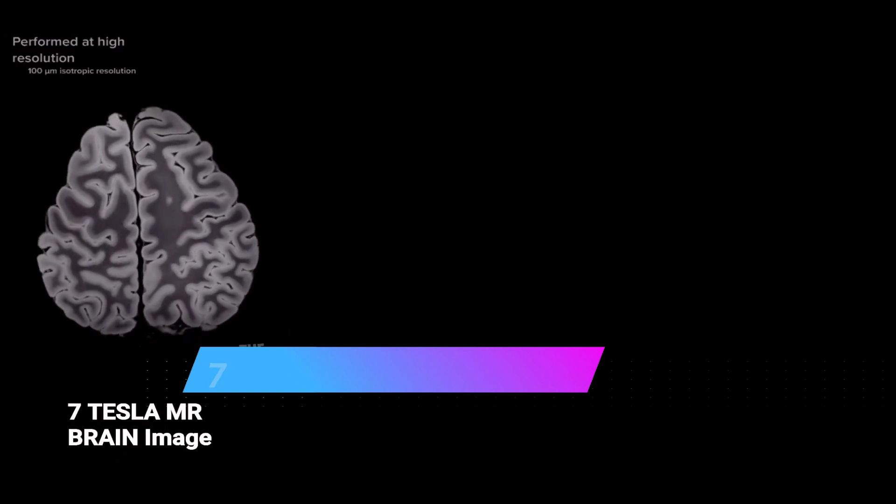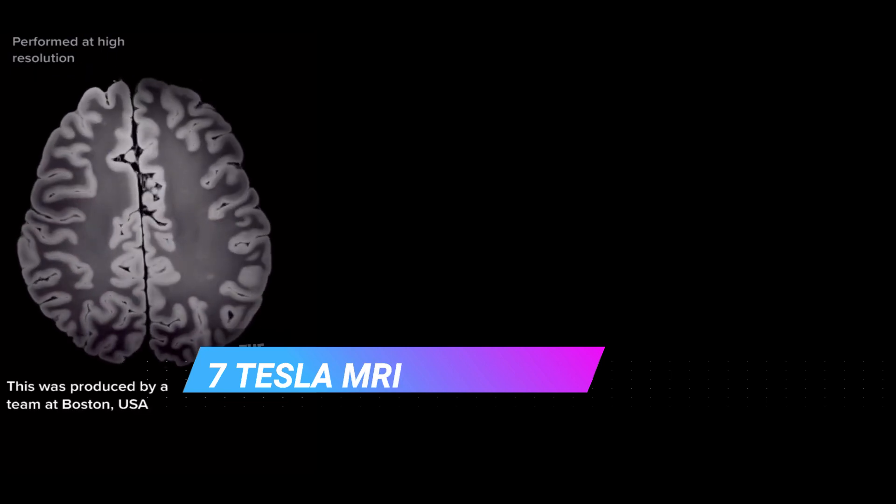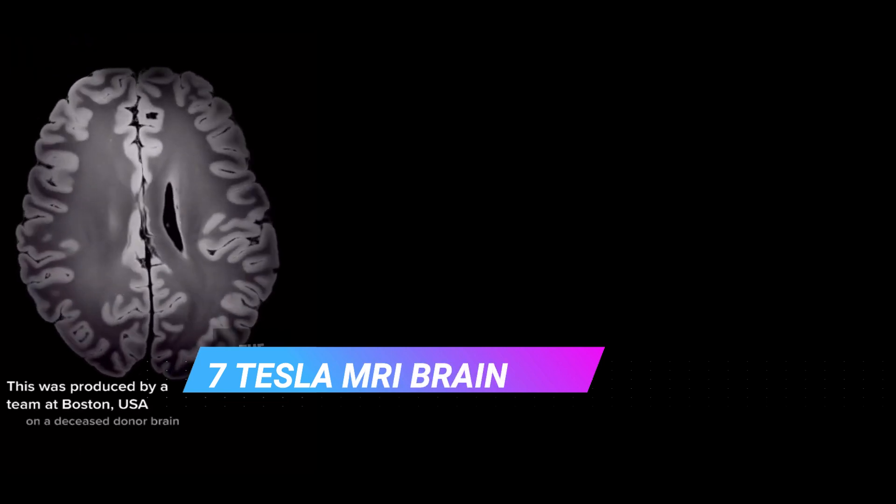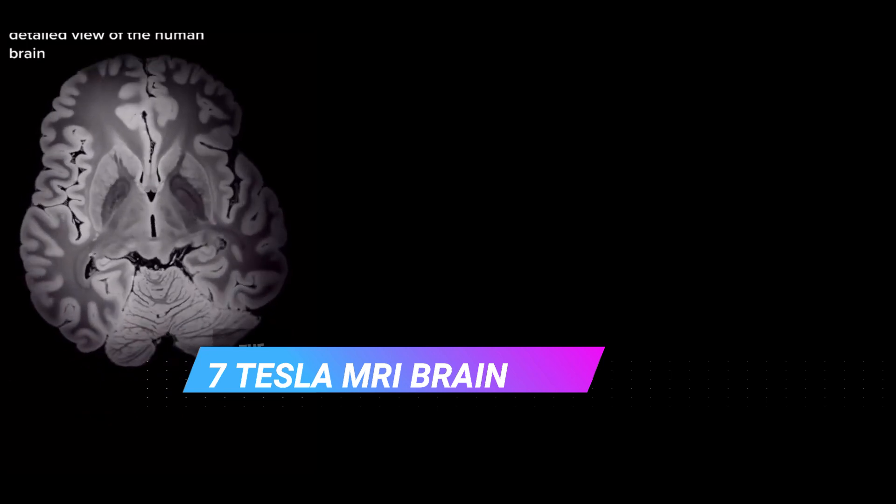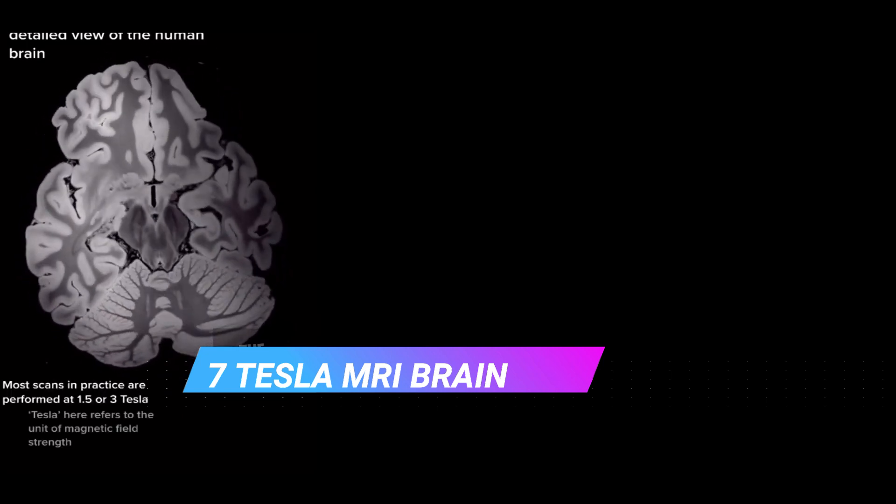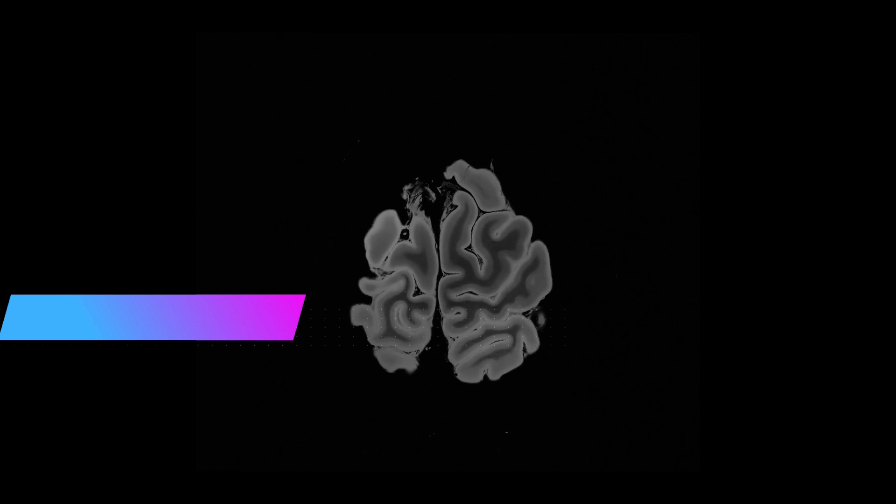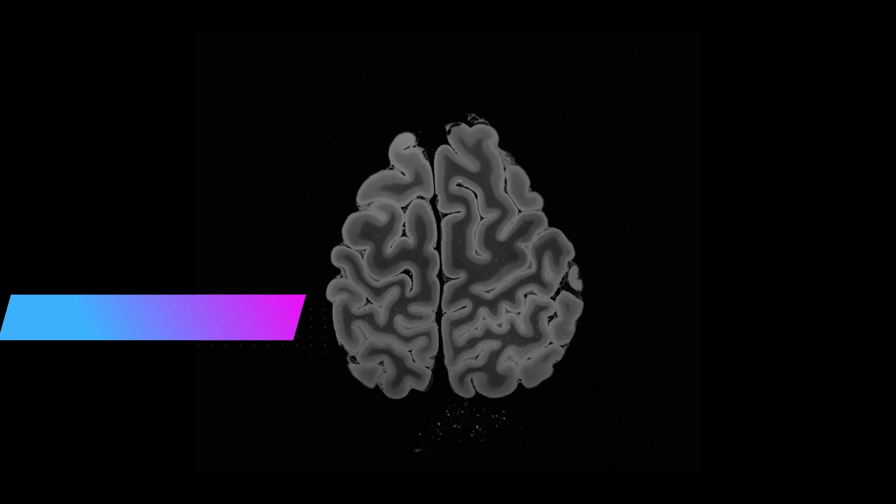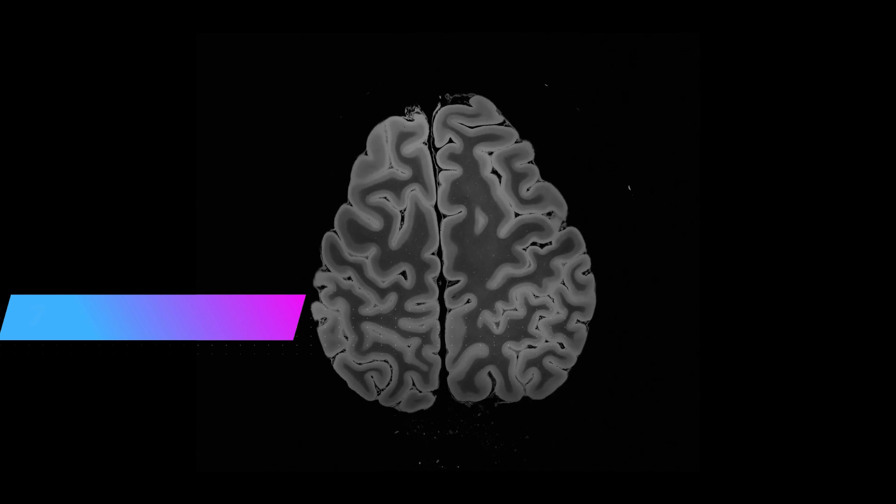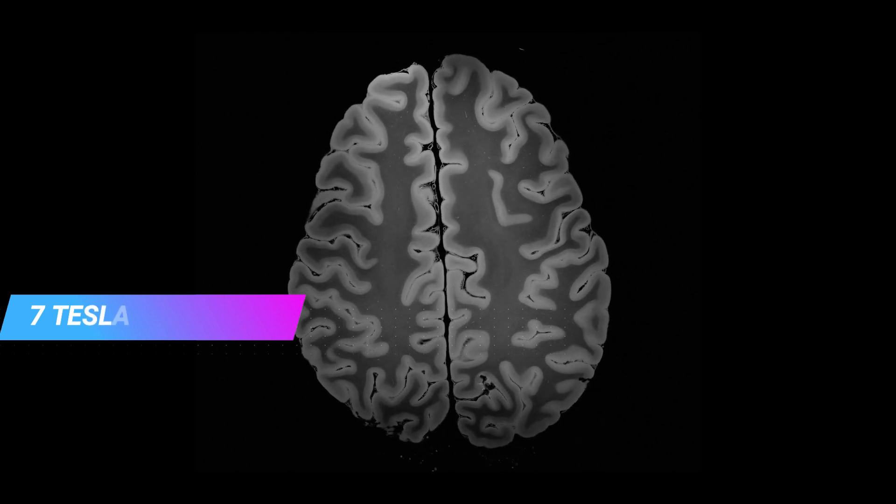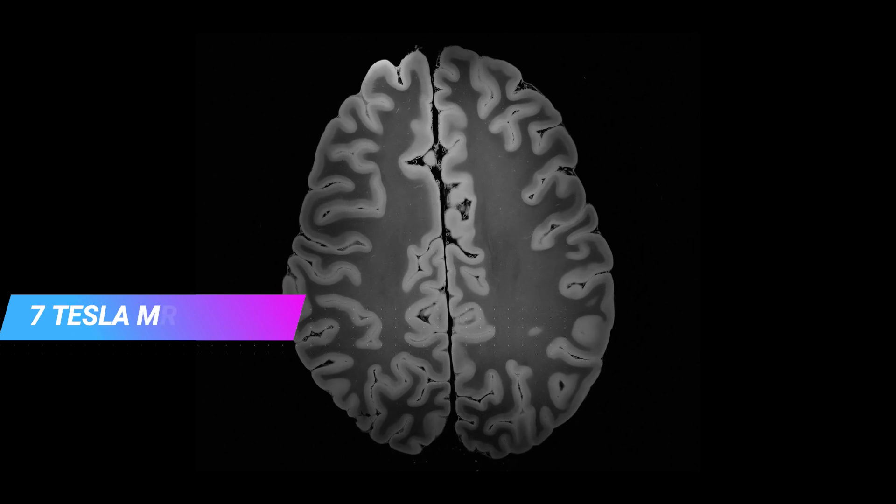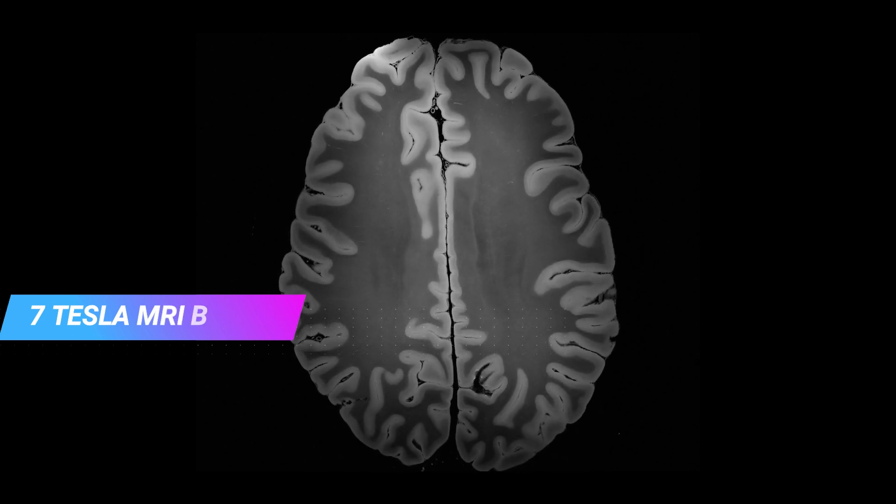This is seven Tesla brain image. Look at the current strength, you can see the clarity. This was done at Boston USA by a team. This is the reason I want you to understand - the bigger the camera, the bigger the clarity, bigger the resolution, and bigger the perspective. This is your MRI brain seven Tesla. Now let me show you this 100 micron MRI of the human brain. Look at the kind of resolution. This is extracted from Radiopaedia - it's a research project. You can see the kind of clarity it has.